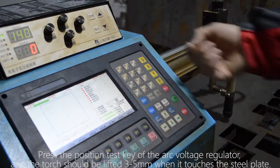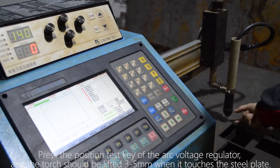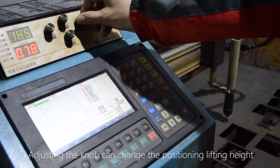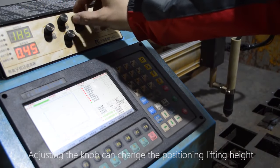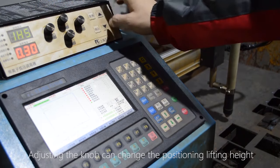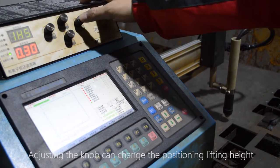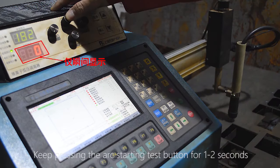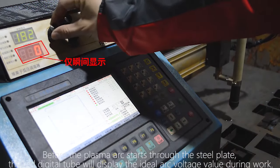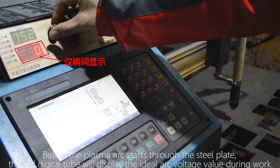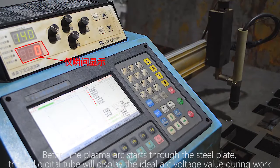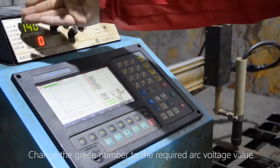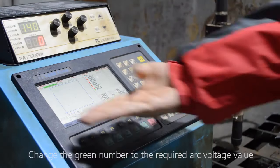Press the position test key of the arc voltage regulator and the torch should be lifted 3 to 5 ohm when it touches the steel plate. Adjusting the knob can change the positioning lifting height. Keep pressing the arc starting test button for 1 to 2 seconds. Before the plasma arc starts through the steel plate, the red digital tube will display the ideal arc voltage value during work. Change the green number to the required arc voltage value.